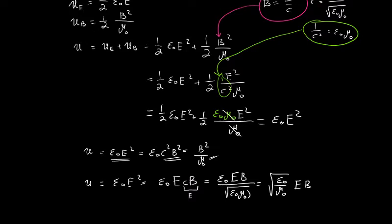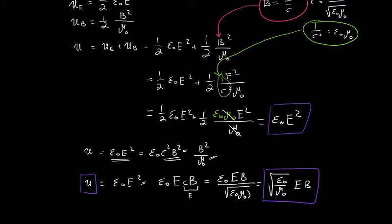So here are some useful expressions for energy density that include both electric and magnetic fields, or can include only the electric field. This was the energy density in any region of space at any instant. Now let's determine the energy the wave transports per unit time per unit area.